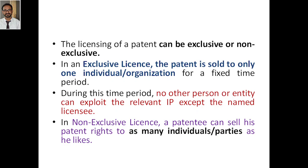Whereas in a non-exclusive license, the patentee can sell the patent rights to many individuals at a time. For example, I can sell my patent to companies X, Y, and Z all together. Why go for a single company? I can go for many companies so that I get more money from all of them and let them compete with each other. Exclusive means exclusively given to a single party — one individual or organization — whereas non-exclusive means giving it to many parties or many individuals.